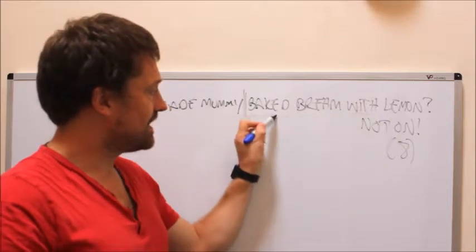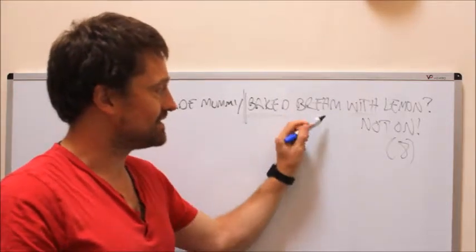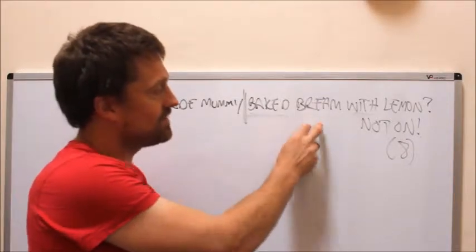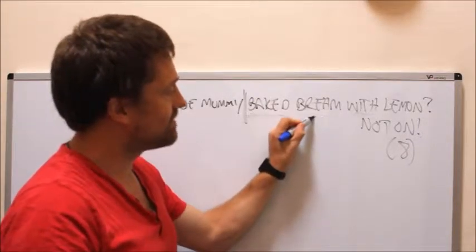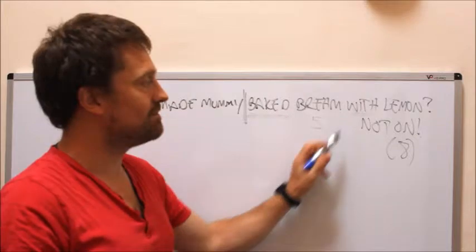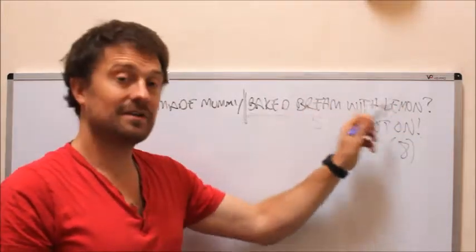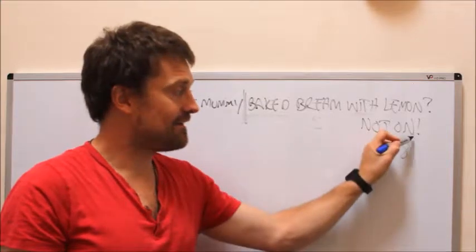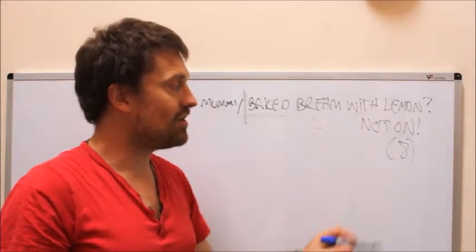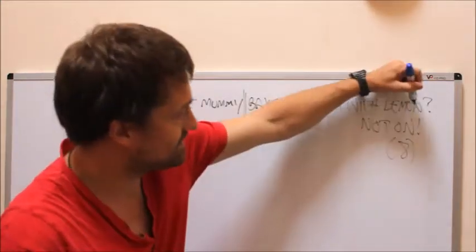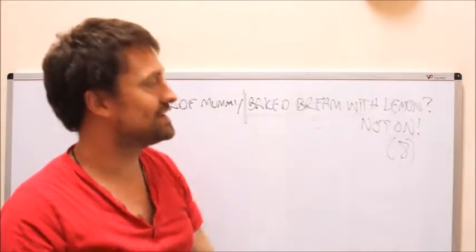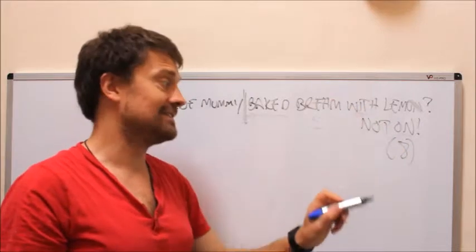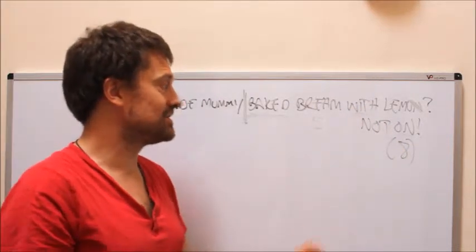But then what's going on with the rest of this? You need eight letters. If this could possibly be an anagram indicator, if you're thinking that's definition, then those five, you've got five coming out of bream. Baked bream with lemon. Baked bream with lemon is five and five, ten, two too many letters. But not on actually means remove those two letters from lemon.